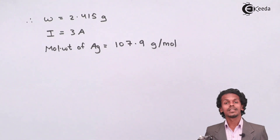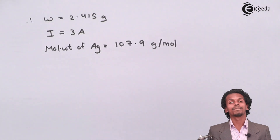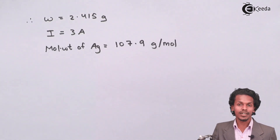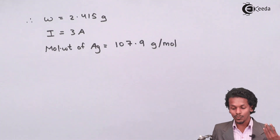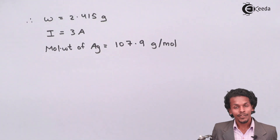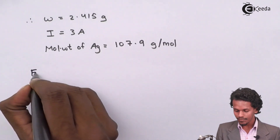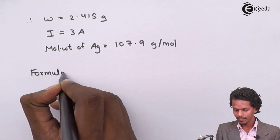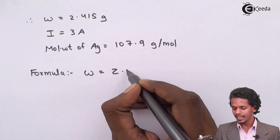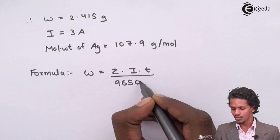With this data we have to calculate the time required to deposit 2.415 grams of silver when 3 amperes of current is passed through the solution. For that we use the formula: W = Z × I × T / 96500 coulombs.